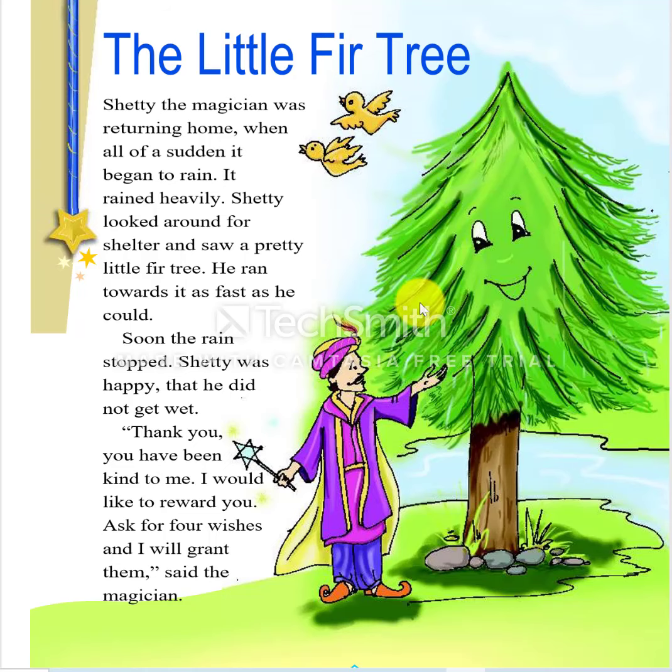Once the magician was coming back home. On the way, it was raining too much, so he went under the fir tree to save himself from the rain. Shetty was happy because he did not get wet. He decided to give a gift to the tree. He asked the tree for four wishes and promised to fulfill them.